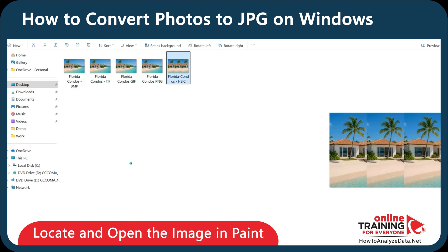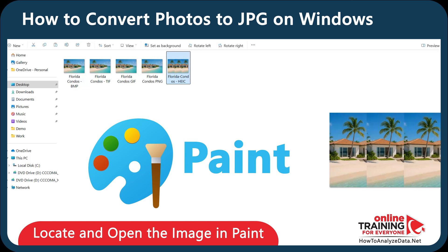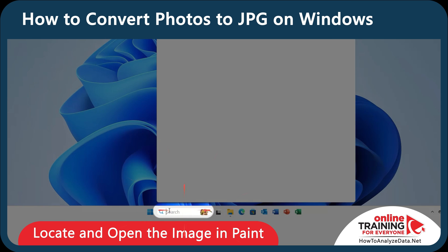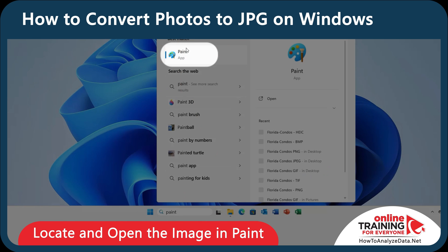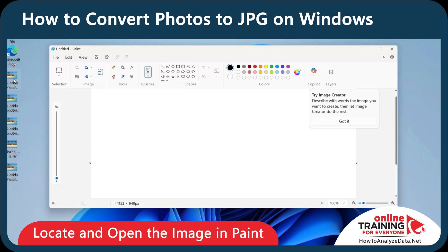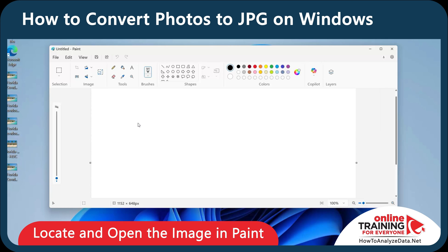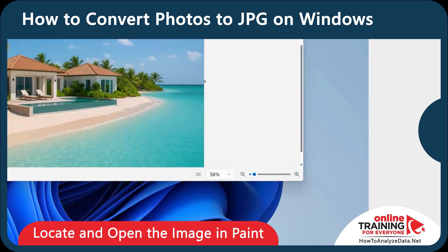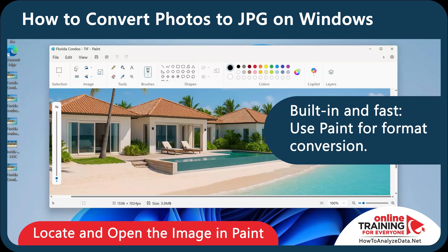All of these formats are widely used and can be opened in the Paint application in Windows. Let's go back to the desktop and open the Paint app. What you can do is drag the picture and drop it into the Paint app. It may not fit the screen, but you can change the zoom level to see the entire picture. All of these formats can be opened in Paint, which also allows basic editing.